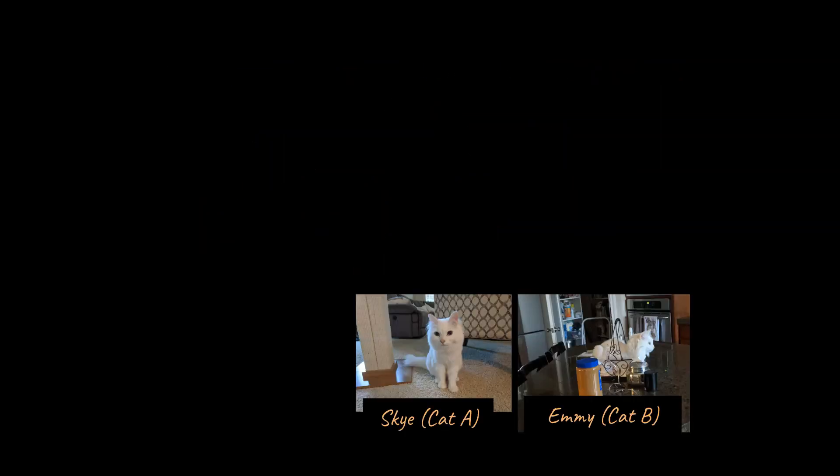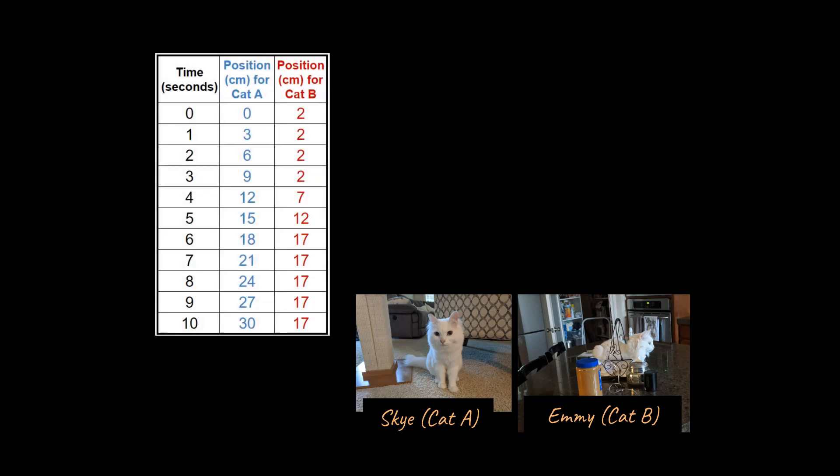I wanted to draw my cats into this. I have two cats. This is Sky, the male on the left. This is Emmy, the female on the right. She's being ridiculous in this picture, hanging out inside a napkin holder so she can get more attention, and so I made up a problem associated with them, and that is a position versus time data table.